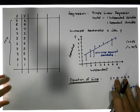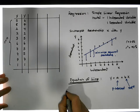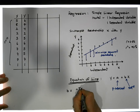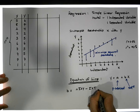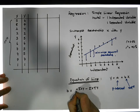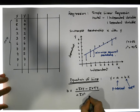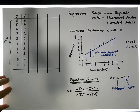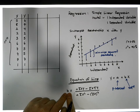The b value is simply equal to n times the sum of the x·y's, minus the sum of the x's times the sum of the y's, divided by n times the sum of the x-squared terms minus the sum of the x terms squared. This calculation gives us the slope of our line of best fit through the data set.